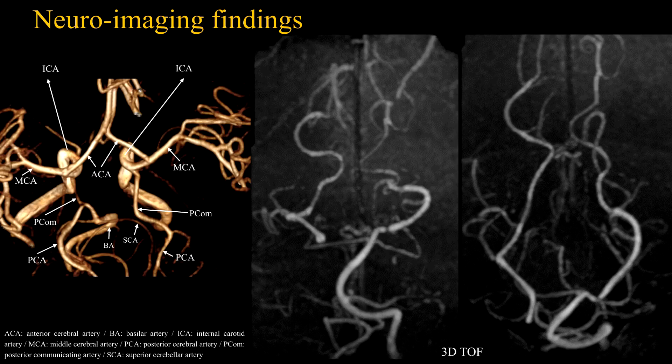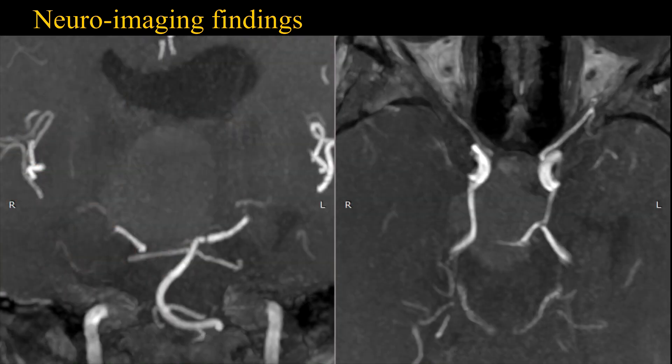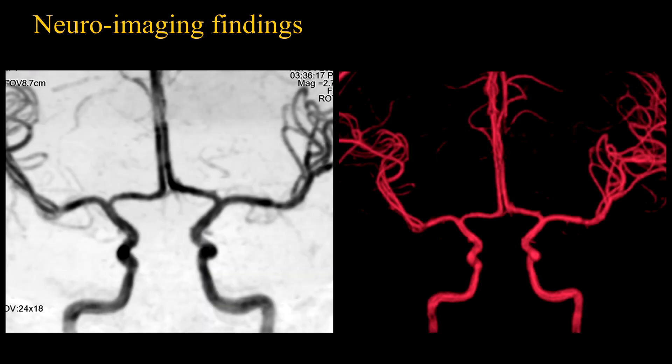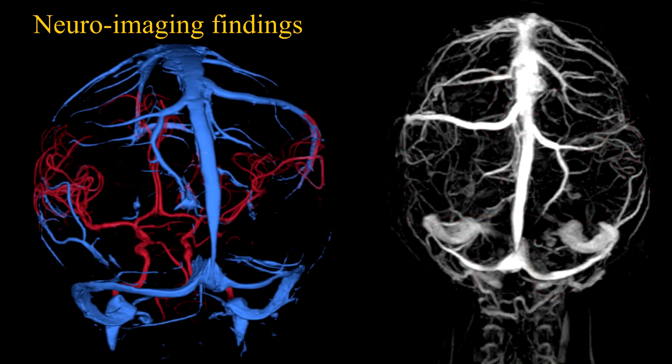Reviewing the vascular anatomy, an important finding is a fetal pattern of the right posterior cerebral artery. Another key point is the position of the anterior cerebral arteries — as they are not superiorly displaced and remain close to their anatomical position, this suggests a retrochiasmatic lesion.